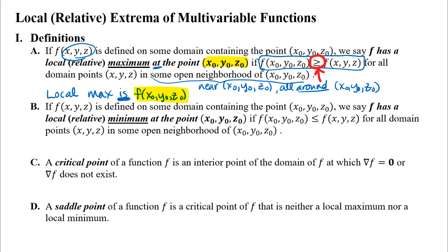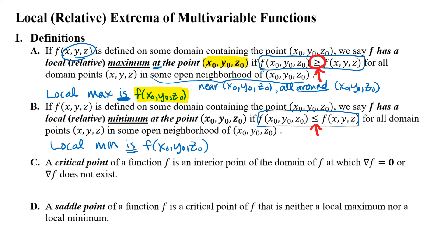The next definition is pretty similar — it defines a local minimum at a point. The key part is the inequality: instead of greater than or equal to, we have less than or equal to. So we have a point where the function output is less than or equal to all the other function outputs nearby. Again, the local minimum of the function is the function output at that point. You might remember from calculus one that when finding local max and min points you started by finding critical points.